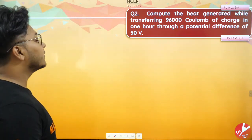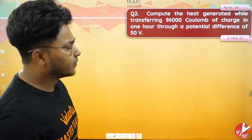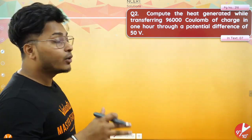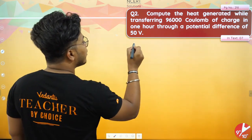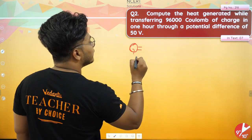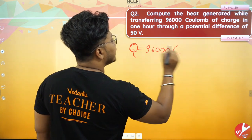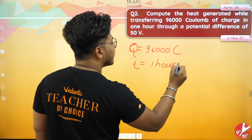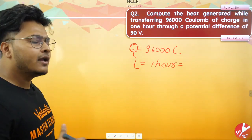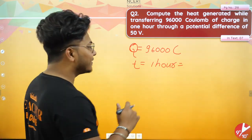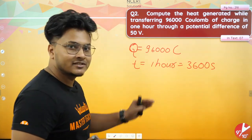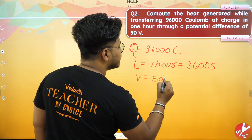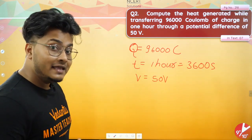Moving on to question number 2, which is in this box — it's very simple. Compute the heat generated while transferring 96,000 coulombs of charge in one hour through a potential difference of 50 volts. The charge given is Q = 96,000 coulombs, flowing in one hour, which is 3,600 seconds — that is 60 minutes into 60 seconds. We have to find the heat generated in this system.